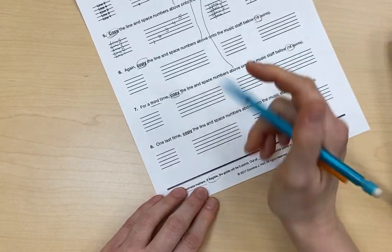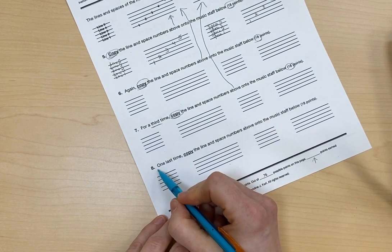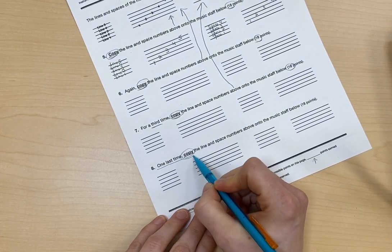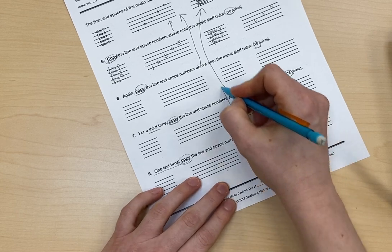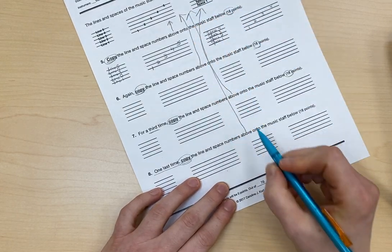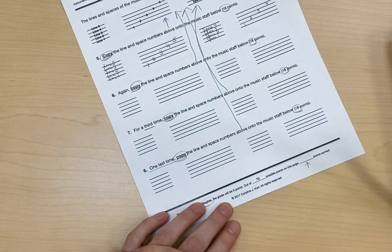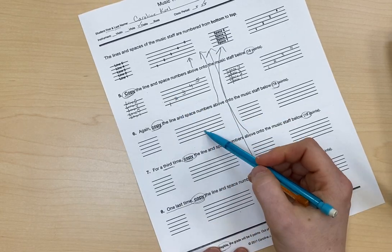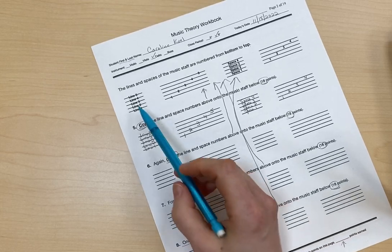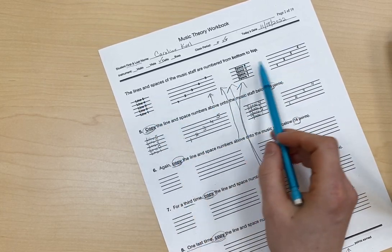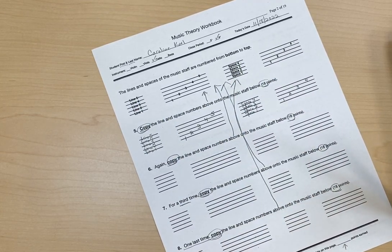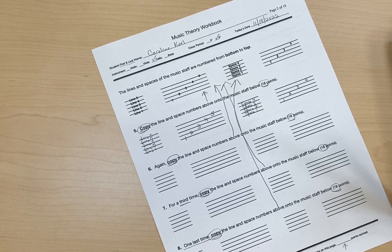And then the last one, number eight, says, one last time, copy the line and space numbers above. So we're going to the above part here, onto the music staff below. And this is also worth 18 points. So five, six, seven, and eight should all look like the example up at the top. And that is how you do the lines and space numbering. Thank you.